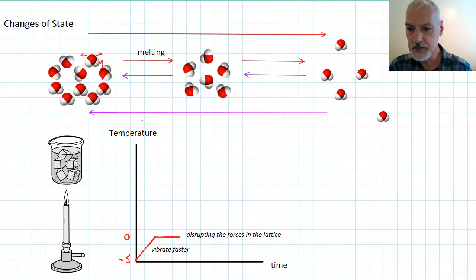We're disrupting the forces that hold the particles together in this nice, ordered pattern. Once we have disrupted all the forces and we've melted it and turned it into a liquid, we've now arrived at this state, the temperature will again begin to rise.